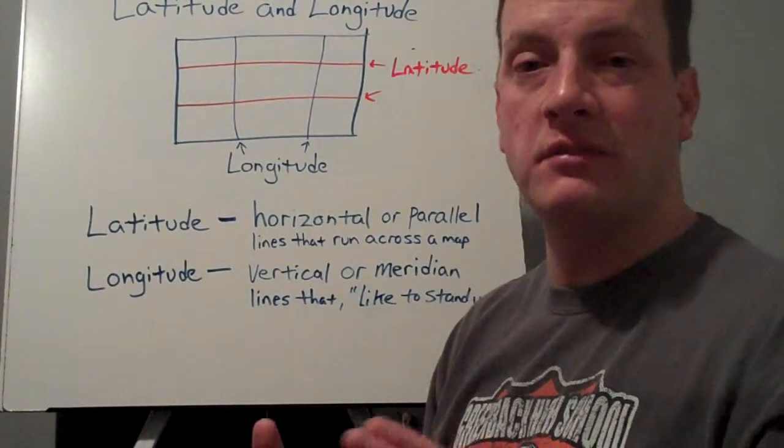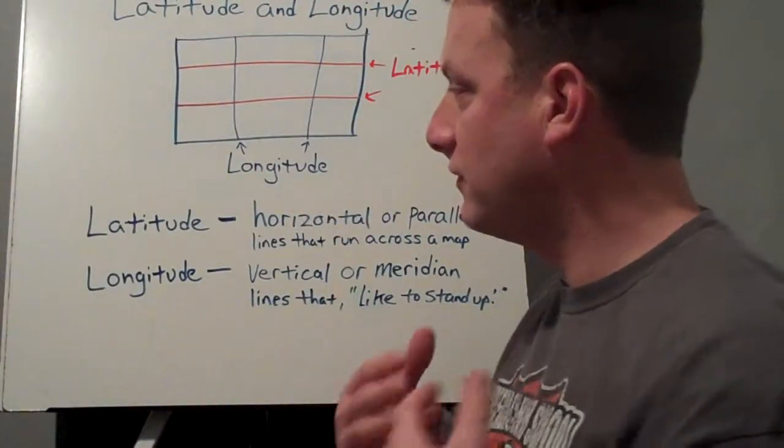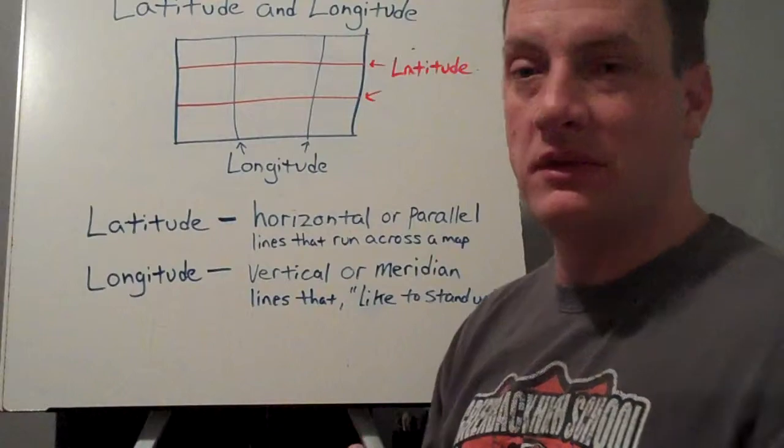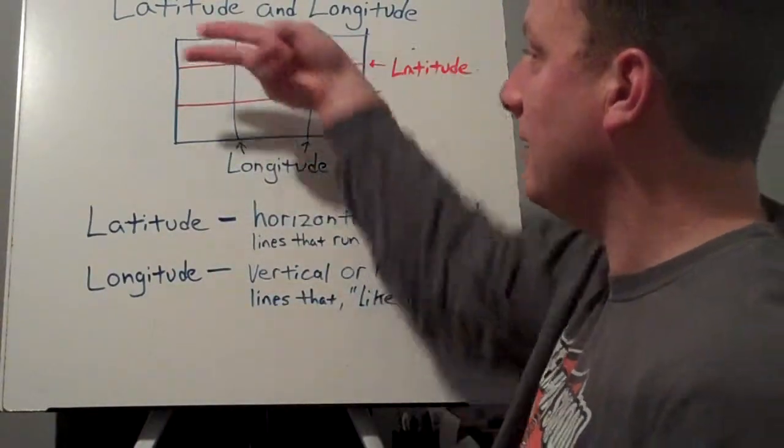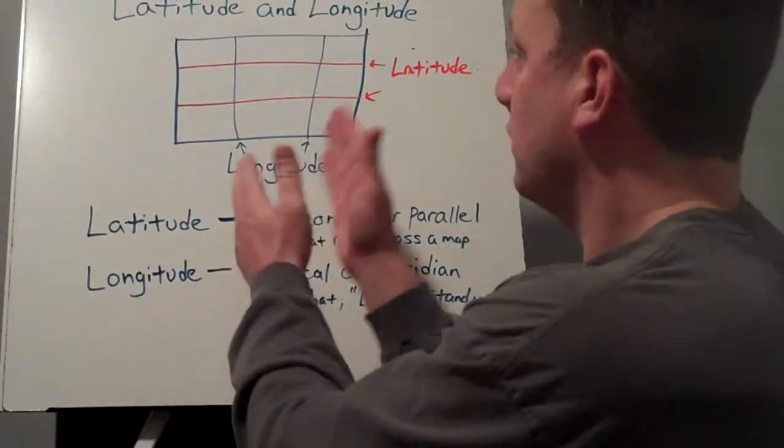Okay, so for me that was the easy way to remember. Latitude lines have an attitude—they always lay down. Longitude lines are like a fence post—they're always standing straight up.